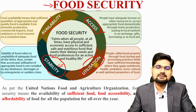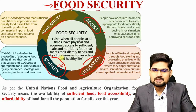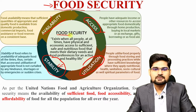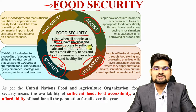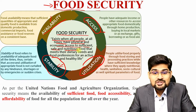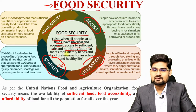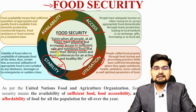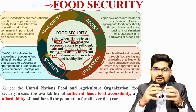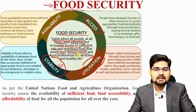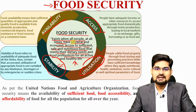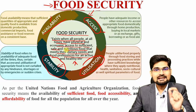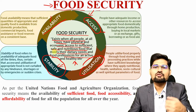Remember: availability, accessibility, utilization and stability are the four major pillars of food security. Food security in simple terms exists when all people at all times have physical and economic access to sufficient, safe and nutritious food that meets their dietary needs and food preferences for an active and healthy life. Anything away from these conditions is when we become food insecure.